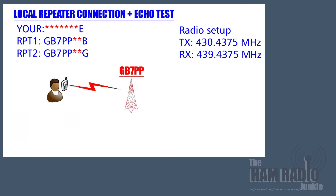In the next example, a ham wishes to check what their receive and transmit audio is like. To do this, they employ the echo test facility. The only change of note is under the Your section — it has seven spaces and rather than the letter I as we previously saw, it now has the letter E. After transmitting and speaking, the echo test function will then repeat what it's just heard and the ham can then listen to their own transmission back again.